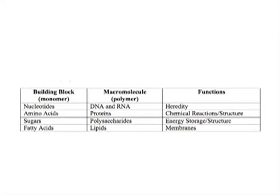Welcome back. I've filled out the chart and hopefully our answers agree reasonably well, so let's take a look. There are four main macromolecules in the cell. They include the nucleic acids, which are the DNA and RNA, the proteins, the polysaccharides, and also the lipids. All of these macromolecules are made up of smaller building blocks and all play critically important roles in the cell.